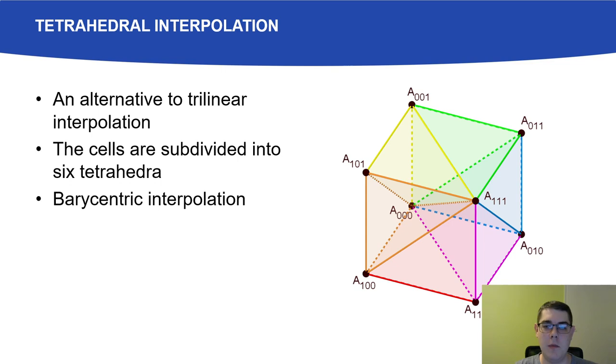It works by subdividing the cubical cells of the grid into the joint union of tetrahedra. Then we use barycentric interpolation inside them, interpolating the four samples of the vertices.